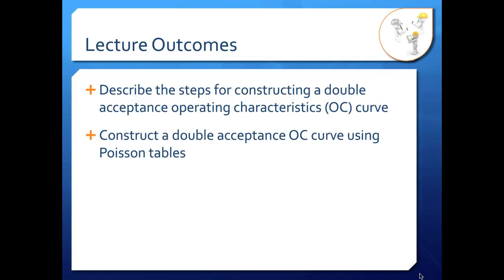In this video, we'll look at the steps for constructing a double acceptance operating characteristics curve and we'll actually construct a point on one using an example problem.